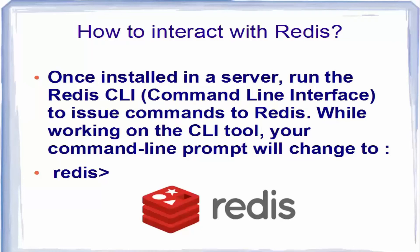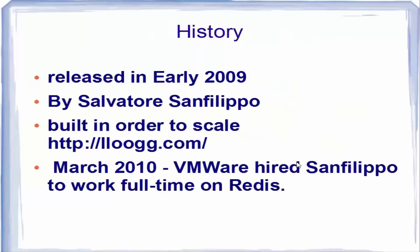To interact with Redis, it can be installed on a server and interacted with via a command line interface called Redis CLI. Using this Redis CLI we can interact with our Redis server. When we open this Redis client, the first line will look like the Redis angle bracket prompt. In coming videos we'll see how to install and use Redis.